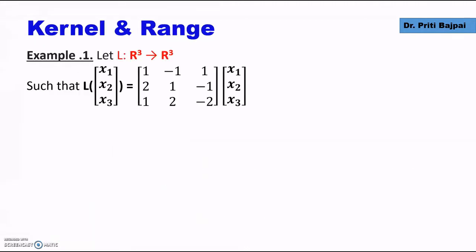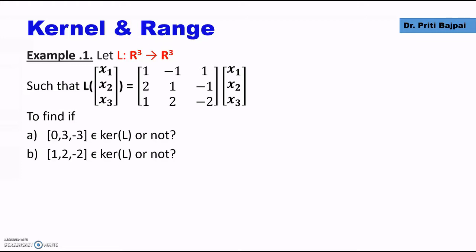Let's take an example. What if we are given a linear transformation L from R³ to R³, such that L applied on a vector (x₁, x₂, x₃) gives the matrix product of [1, -1, 1; 2, 1, -1; 1, 2, -2] times (x₁, x₂, x₃)?